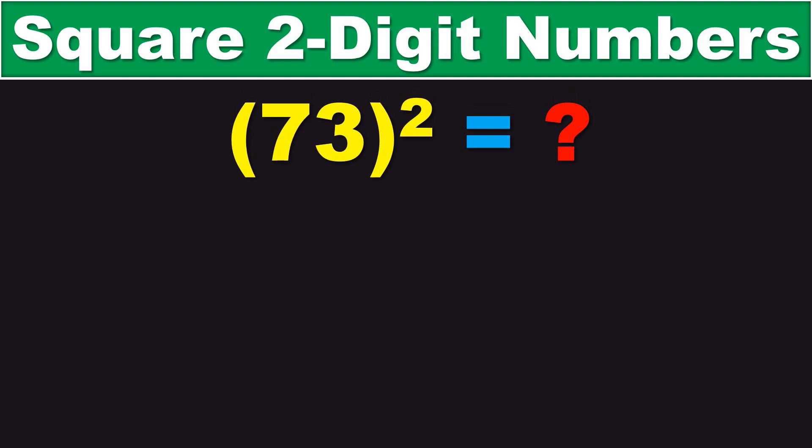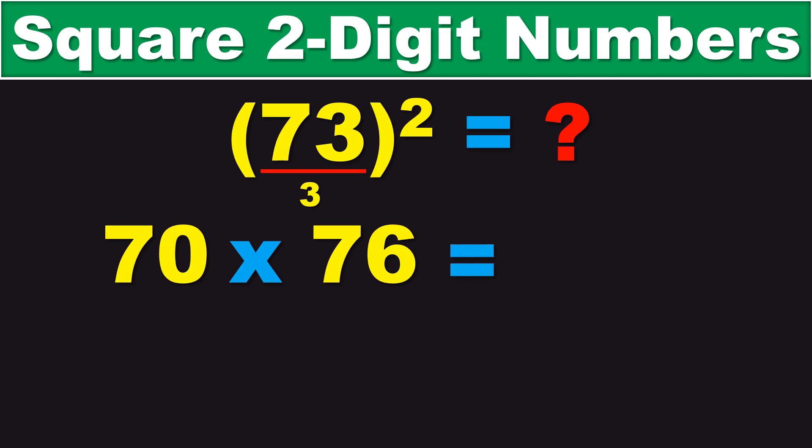73 nearest multiple of 10 is 70. And, then, if we take the difference between those two, 73 minus 70 is 3. And, then, we add 3 to the original number 73, getting 76.